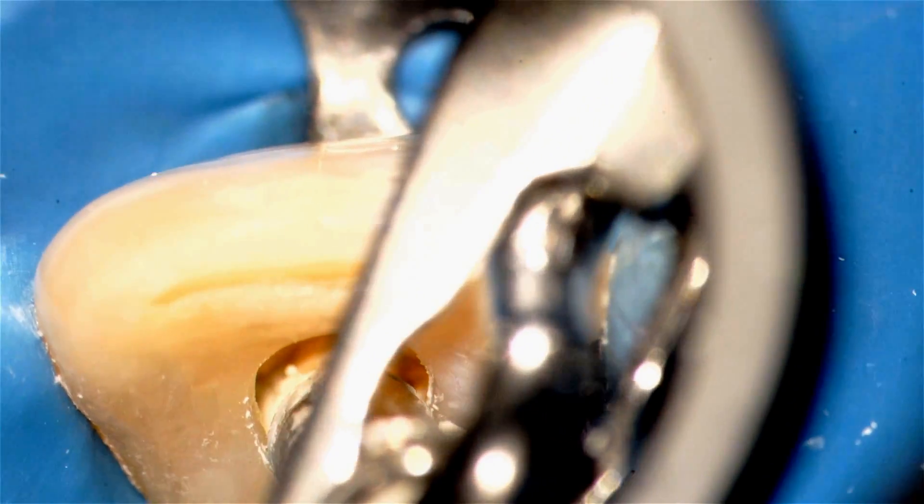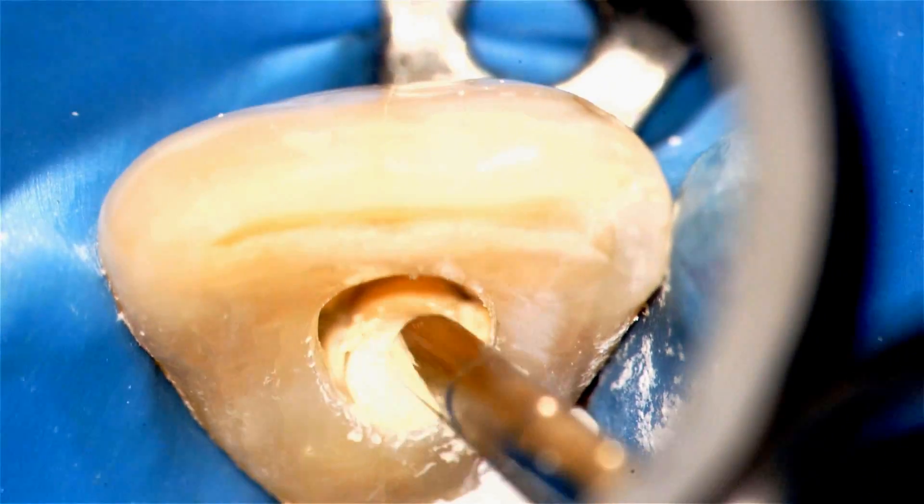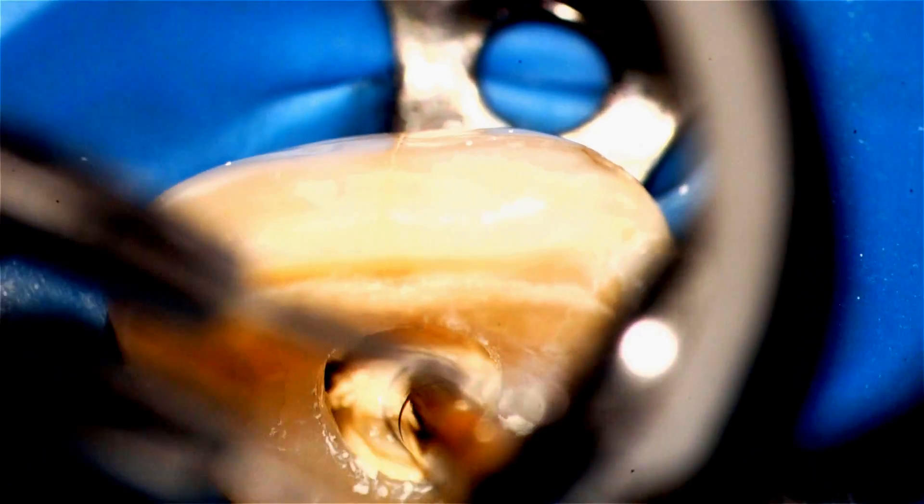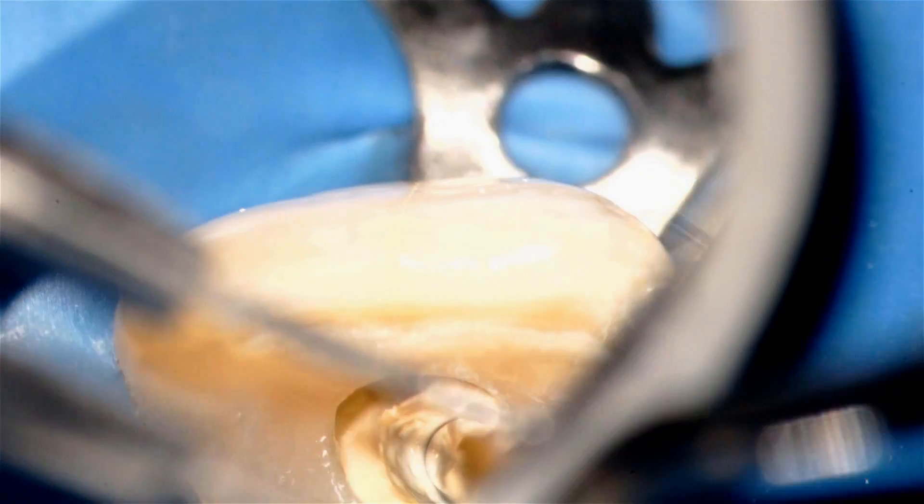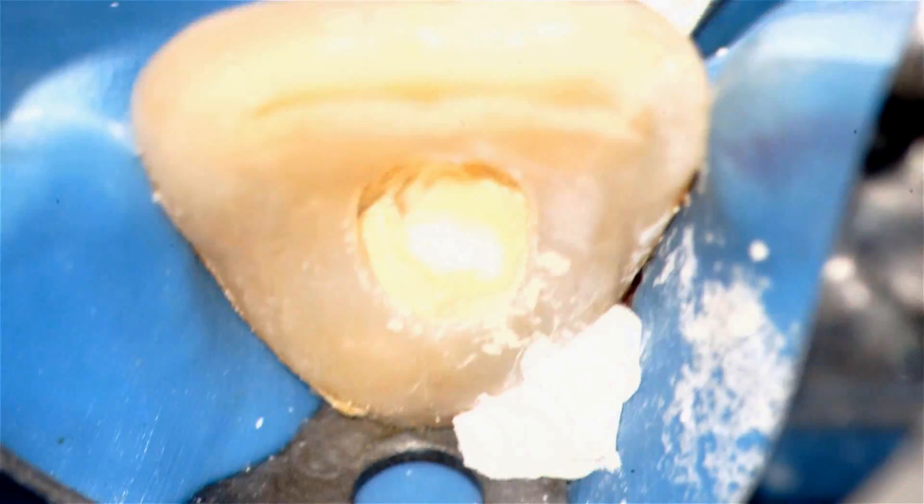There's the placed Biodentine, completely filling the resorption crypt, and now I place the Cavett on top of it. Now in this case, I did not want to place the core. Sometimes I'll place a Cavett layer and just place the core on top of it, but in this case, I wanted to have some bonded composite up higher to give this tooth some additional strength. There's the Cavett being squashed in.